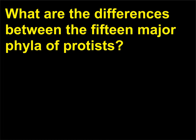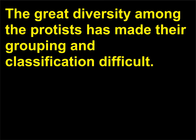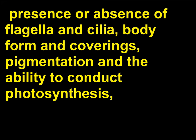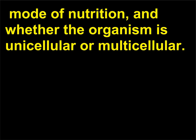What are the differences between the 15 major phyla of protists? The great diversity among the protists has made their grouping and classification difficult. Characteristics used to classify protists include mode of locomotion, presence or absence of flagella and cilia, body form and coverings, pigmentation and the ability to conduct photosynthesis, mode of nutrition, and whether the organism is unicellular or multicellular.